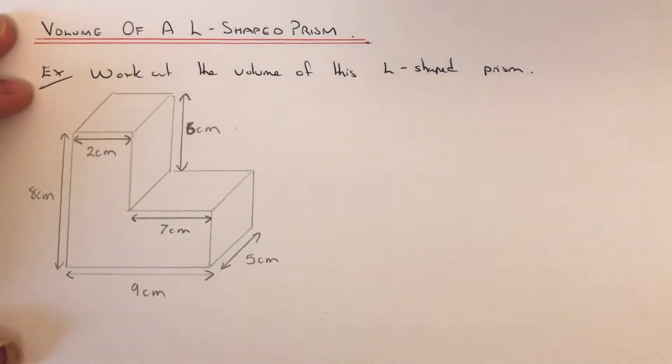Hi guys, welcome back. This is Maths 3000. Today I'm going to show you how to work out the volume of an L-shaped prism. Let's have a look at the example here. First thing we want to do is split the L-shaped prism into two cuboids.